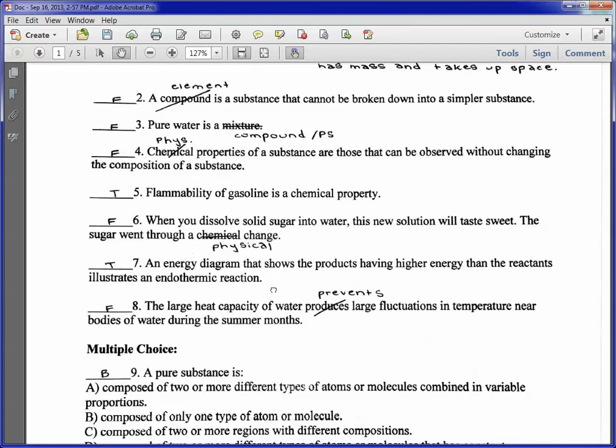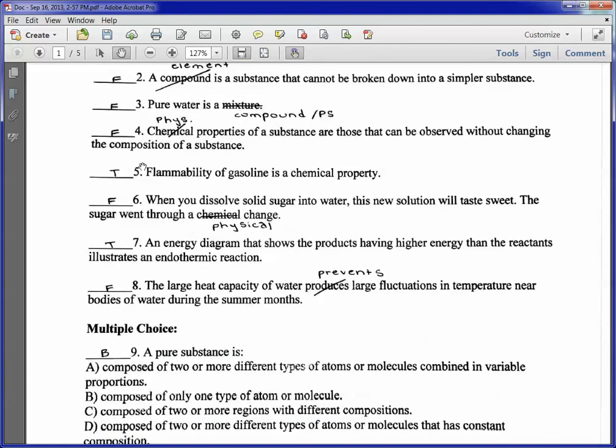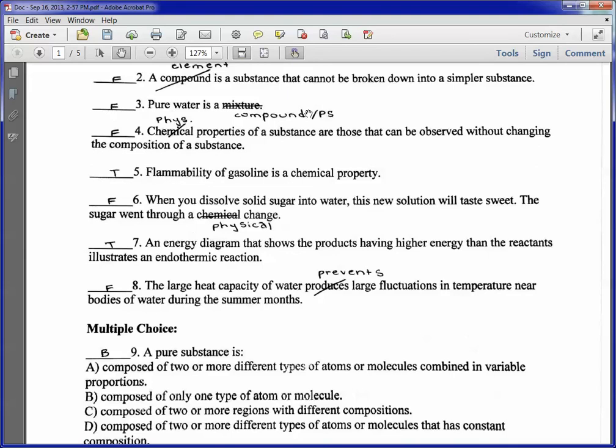Three, pure water is a mixture, that's false. H2O is a compound or a pure substance. Four is false. Chemical properties of a substance are those that can be observed without changing the composition. That is a physical property. Five, flammability of gasoline is a chemical property. That's true.